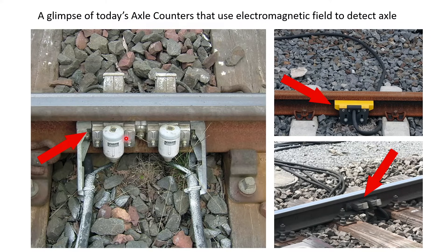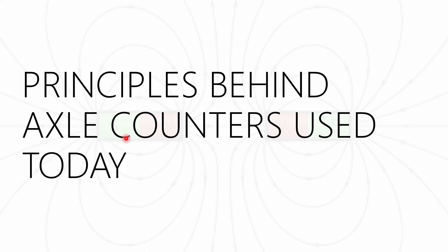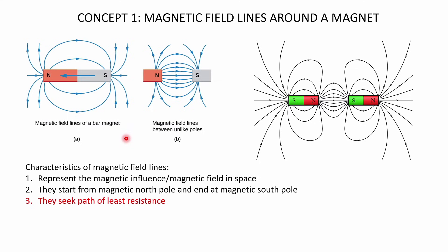That's exactly what we're going to look into in this video — the principles behind axle counters used today. I'll be taking a few steps back and talking about some concepts of electromagnetism, albeit without going into too much detail. I'll only cover the basic concepts that are extremely relevant for axle counters. The first concept is magnetic field lines around a magnet.